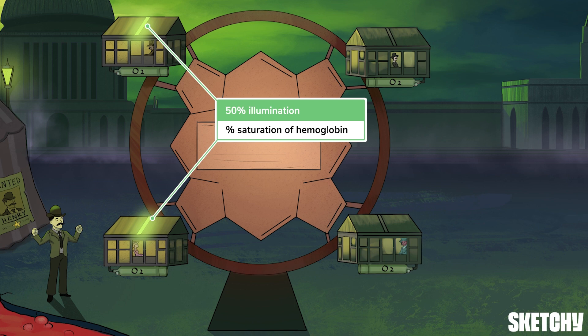Percent saturation refers to the percentage of binding sites that are occupied relative to the total amount of possible binding sites. If two binding sites are occupied by oxygen out of a total of four possible binding sites, then we can say there is 50% saturation of hemoglobin. Half of these cars have their lights on while the other half do not, so this ride is 50% saturated. 50% saturation is a very important physiological parameter to know about, but more on this in another lesson.